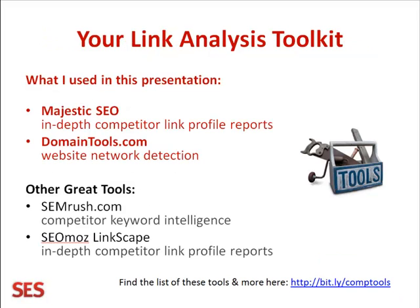Your link analysis toolkit — these are some of the best tools out there in my opinion. Majestic SEO is an amazing database of links; that's all it does, it just collects links from around the internet. They've got billions for their fresh index and trillions of links for their historical index — all of the links from the last few years. That way you can actually use that index to determine what links your competitors had and no longer have now. These are all things, if you really want to get detailed and find out how a competitor has succeeded, that's one way to go.